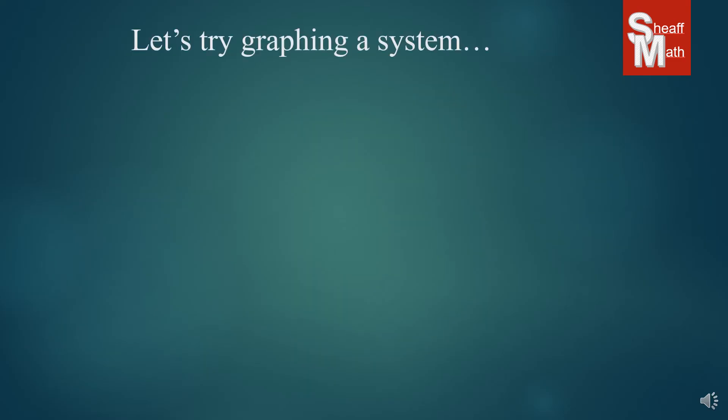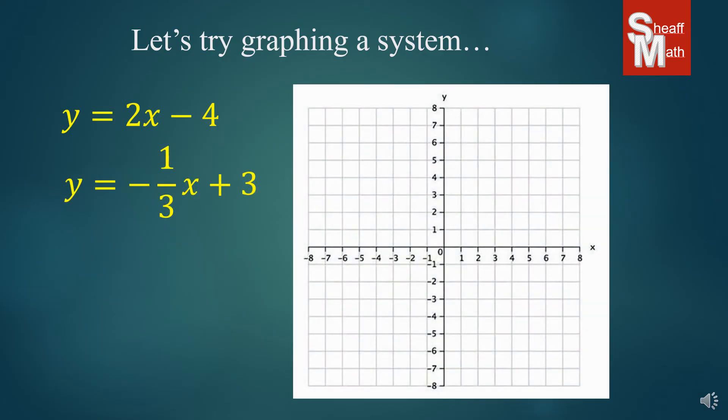So now let's try graphing a system. So we have our two equations in our xy coordinate plane. And we'll start with our first equation y equals 2x minus 4. So we start with that negative 4 on the y-axis. We put a point there. And then we use our slope. And since it's a whole number we put it over 1. And it's going to go up 2 over 1. And so you can put as many points as you want and then draw a line through it.